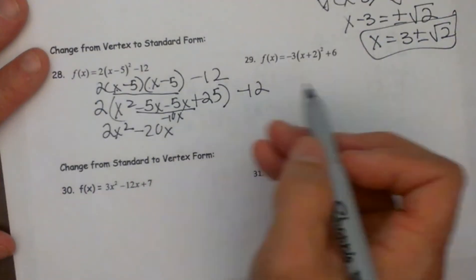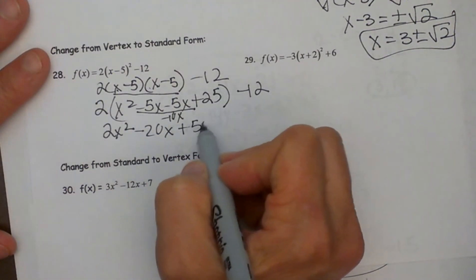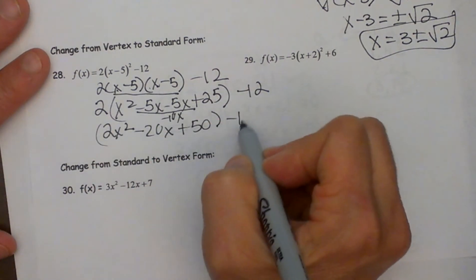If you need to do that separately that is fine and then 2 times 25 is 50 all minus 12.